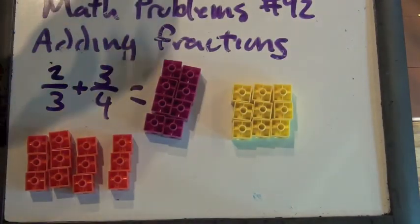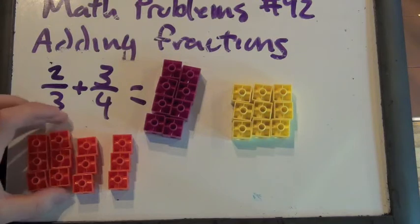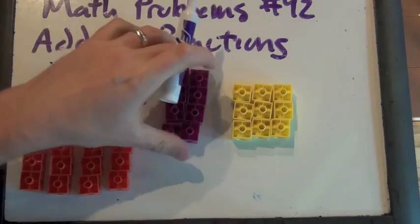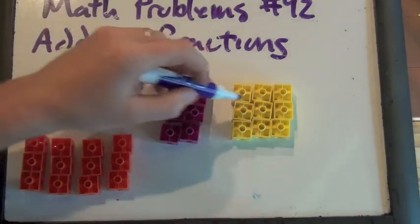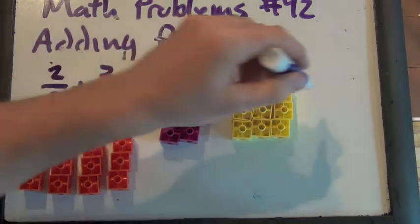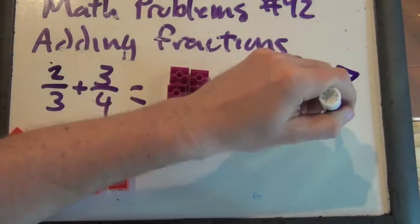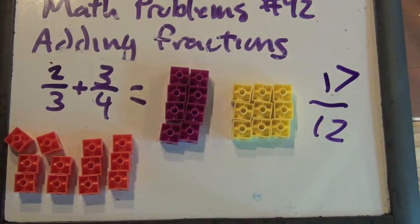So, now, how many blocks was two-thirds? Two-thirds was eight blocks. How many blocks was three-fourths? Nine. So, how many, what is two-thirds plus three-fourths going to be? How many blocks is two-thirds plus three-fourths going to be? It's going to be seventeen-twelfths. Seventeen. So, two-thirds plus three-fourths is seventeen blocks, right? Which, and each block represents a twelfth. Each one of our blocks represents one-twelfth. And it's going to be seventeen-twelfths. So, two-thirds plus three-fourths is seventeen-twelfths.